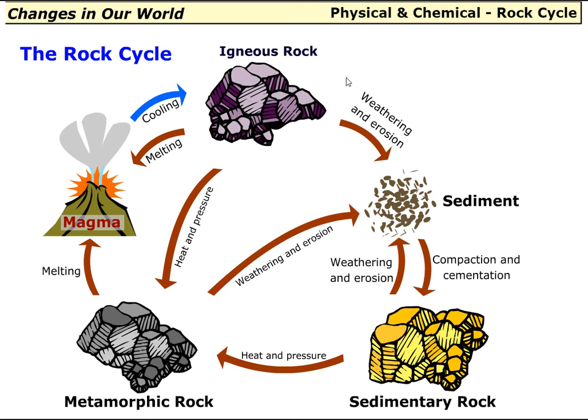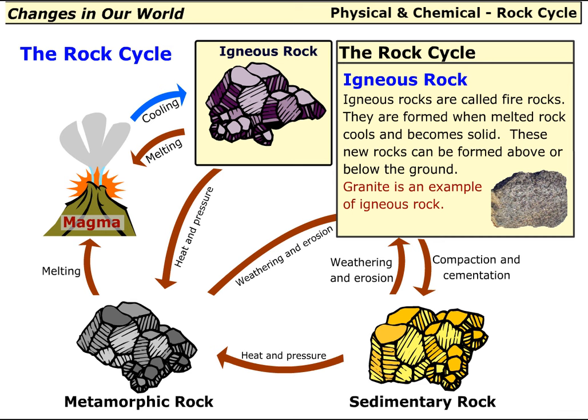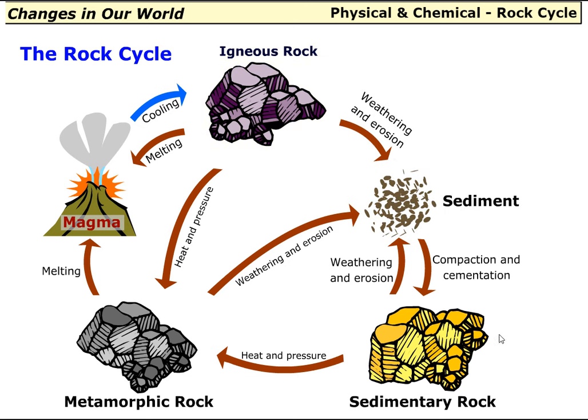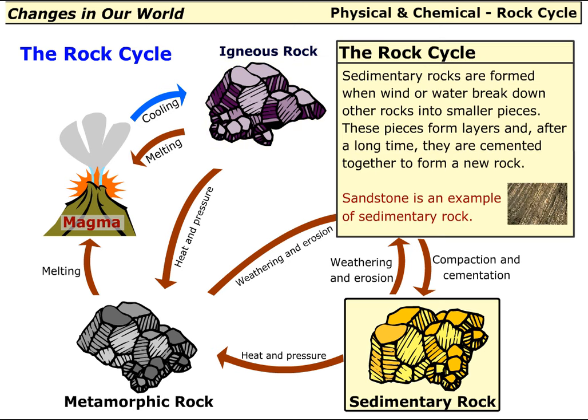Igneous rocks are called fire rocks. They are formed when melted rock cools and becomes solid. These new rocks can be formed above or below the ground — granite is an example. Sedimentary rocks are formed when wind or water break down other rocks into smaller pieces. These pieces form layers and after a long time are cemented together to form a new rock — sandstone is an example.